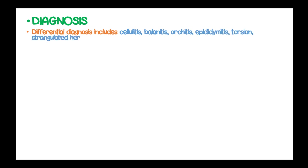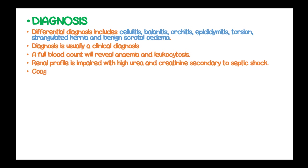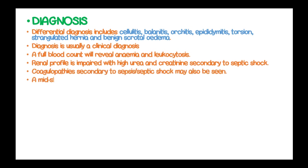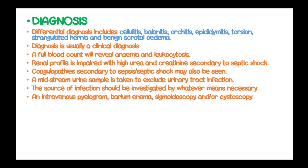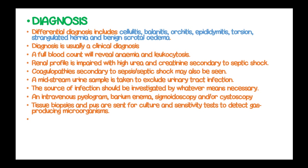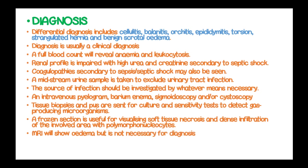The diagnosis of Fournier's gangrene is usually clinical. Differential diagnosis includes cellulitis, balanitis, orchitis, epididymitis, torsion, strangulated hernia, and benign scrotal edema. A full blood count will reveal anemia and leukocytosis. Renal profile is impaired with high urea and creatinine secondary to septic shock. Coagulopathies secondary to sepsis may also be seen. A midstream urine sample is taken to exclude urinary tract infection. An intravenous pyelogram or barium enema, sigmoidoscopy, or cystoscopy can be used in diagnosis. Tissue biopsies are sent for culture and sensitivity tests to detect gas-producing microorganisms. Frozen section is usually helpful in visualizing soft tissue necrosis and dense infiltration with polymorphonuclear cells. An MRI will show edema but is not necessary for diagnosis.